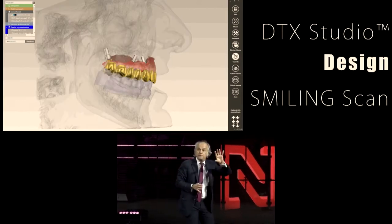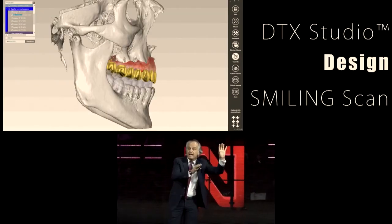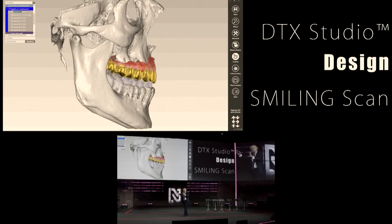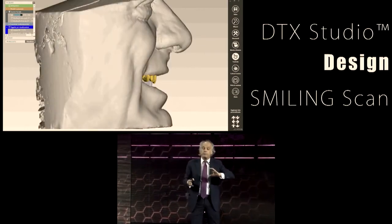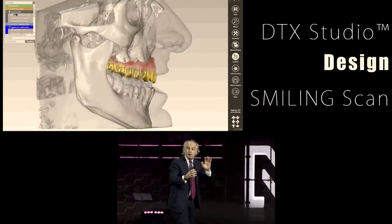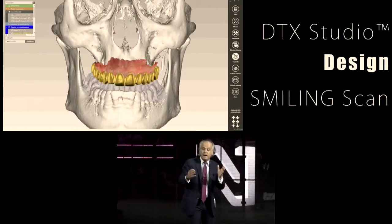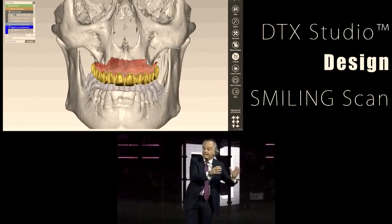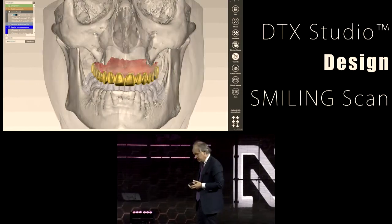We start with the face of the patient and then go into the mouth, looking for the interface between the soft tissue and the bone, and how the prosthesis and the implant will go through such interface — because biology is as important as the biomechanics of the implant treatment.